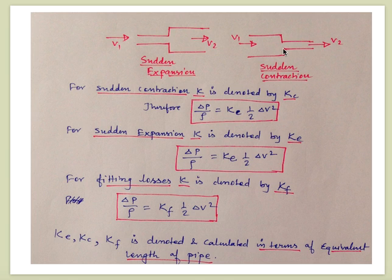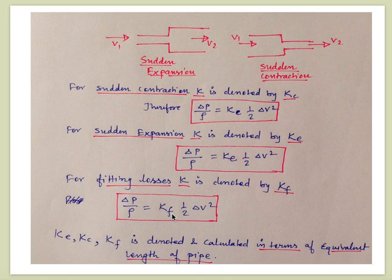The losses for contraction are represented by Kc and for expansion by Ke. We can substitute these into the equation: ΔP/ρ = Ke·(1/2)·ΔV². For fitting losses — losses when fluid flows through pipe fittings — we use Kf. The values Ke, Kc, and Kf are determined and calculated in terms of equivalent length of pipe. It's important to understand what equivalent length means.